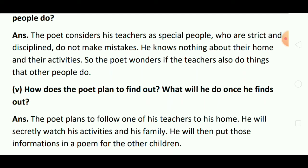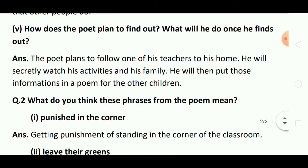How does the poet plan to find out? What will he do once he finds out? Poet इन बातों को कैसे पता लगाते हैं? और एक बार पता चल जाने के बाद वो क्या करेंगे? Answer: The poet plans to follow one of his teachers to his home. He will secretly watch his activities and his family. He will then put those informations in a poem for the other children. Poet योजना बनाते हैं कि वो teacher के पीछे पीछे उनके घर जाएंगे, उनकी सारी activities और उनके family के बारे में चुपके से पता करेंगे, और इन सारी informations को एक poem में लिखेंगे ताकि दूसरे बच्चे भी उस poem को पढ़के teacher के बारे में जान सकें.